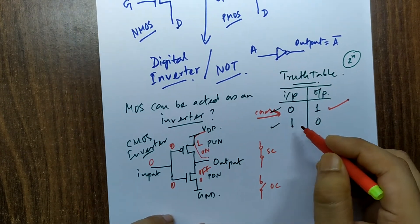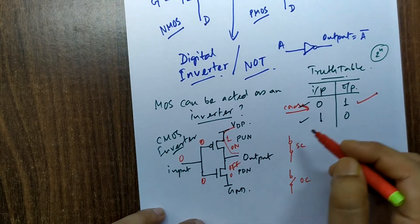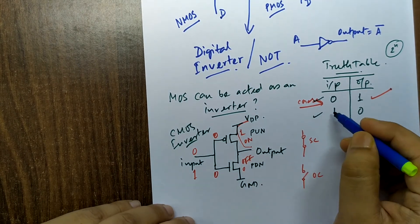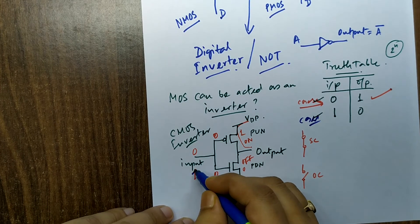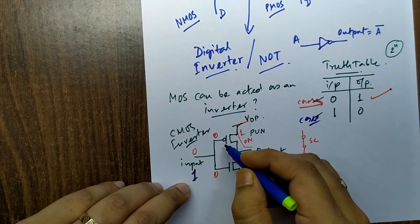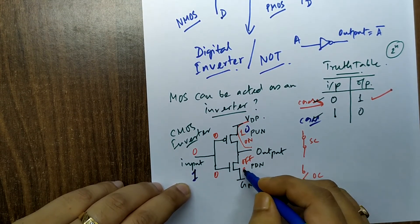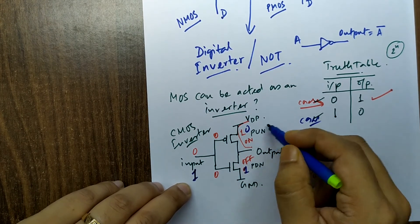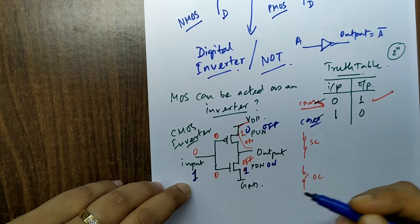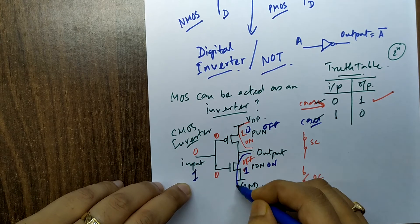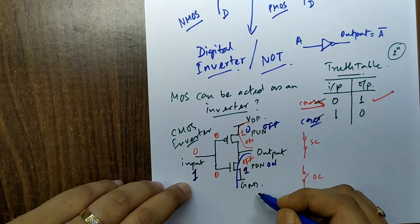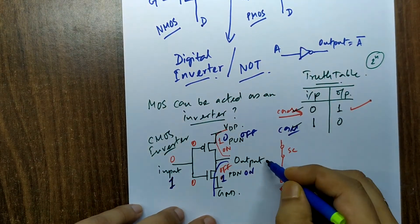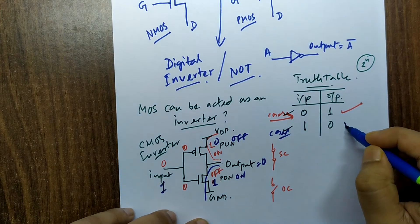Similarly for Case 2: when input is 1, the PMOS will be OFF (open circuit) and the NMOS will be ON (closed circuit/short circuit). So the output is connected through the NMOS to ground. Since the output is connected to ground, the output fetches the ground value, which is 0. So input 1 gives output 0 — Case 2 is also satisfied.